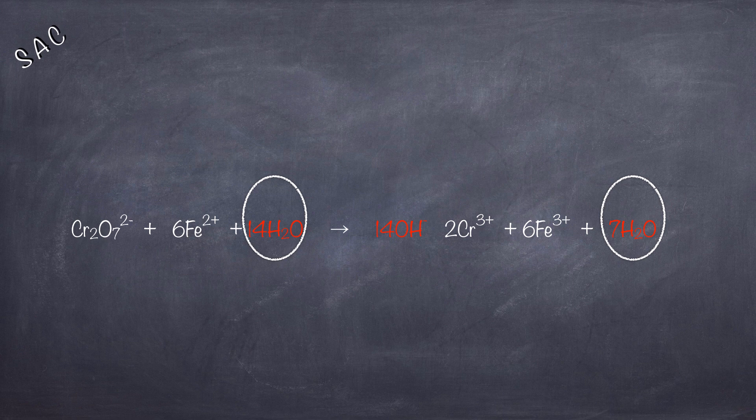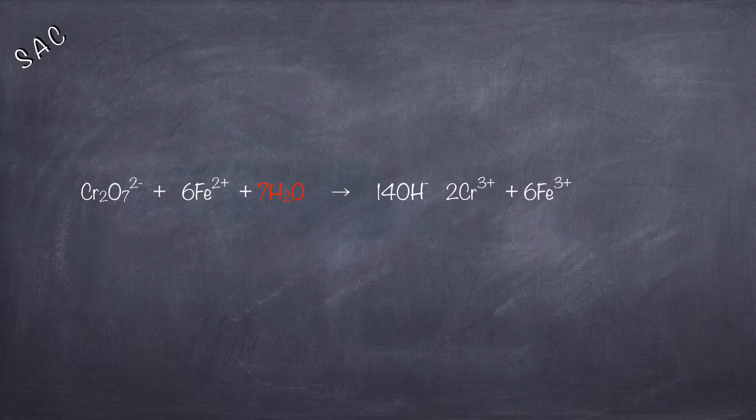Since there are seven water molecules on the product side and 14 on the reactant side, we need to cancel out the common terms. So we will cancel out seven moles of water on the product side, which means we also have to cancel out seven moles of water on the reactant side. When we have done that, this will be the resulting equation — the equation is now completely balanced in basic medium.